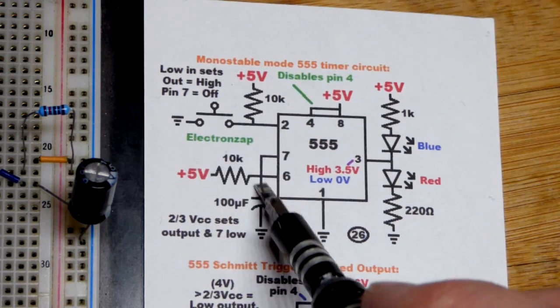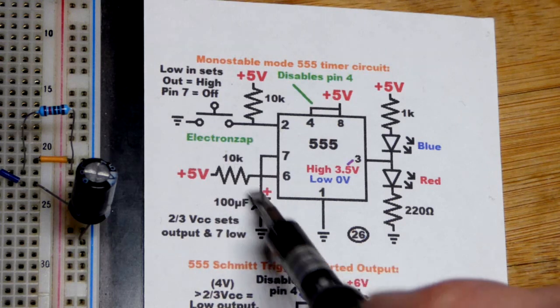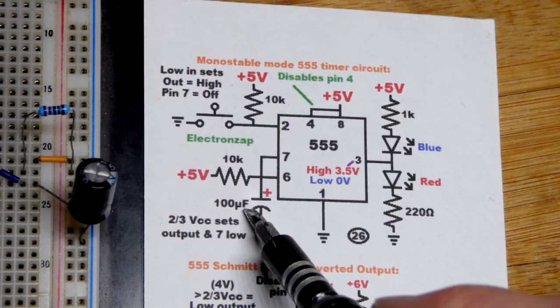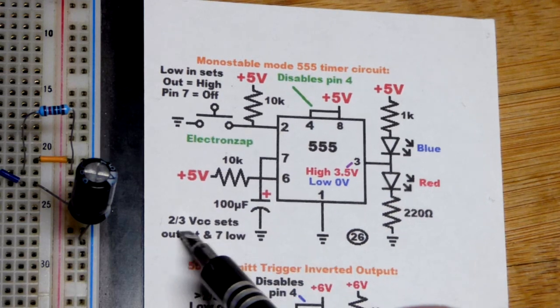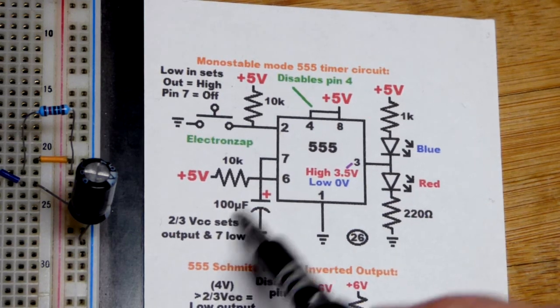At the same time the capacitor will start charging through the resistor. So their values—I used a 10k resistor, 10,000 ohm, and a 100 microfarad capacitor—takes about a second to charge to two thirds of the supply voltage.